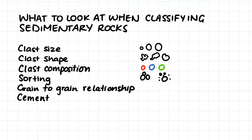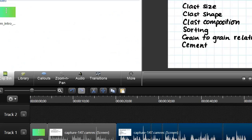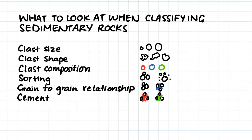We then look at sorting, which is a measure of how organised our particles are within our rock. We also look at the grain-to-grain relationships of our grains — are the grains touching each other or are they separated by some sort of matrix or cement? And finally we look at our cement type, which is the mineral that is holding all our grains together.